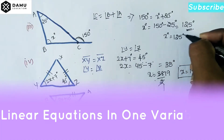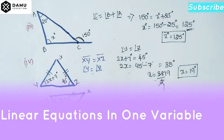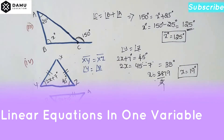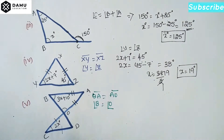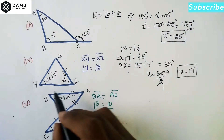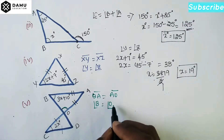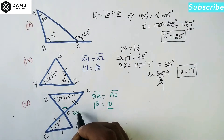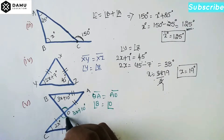Now for the fifth question: BA is equal to AO, which means angle B will be equal to angle O. Angle O equals 3X plus 10 degrees.